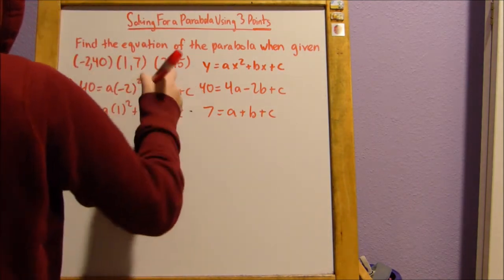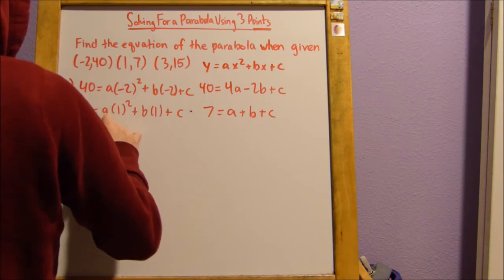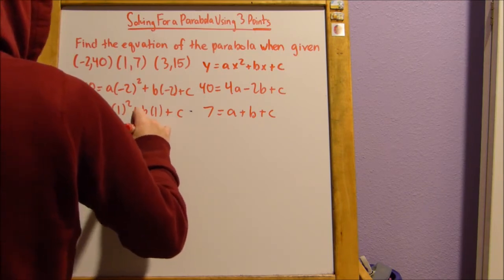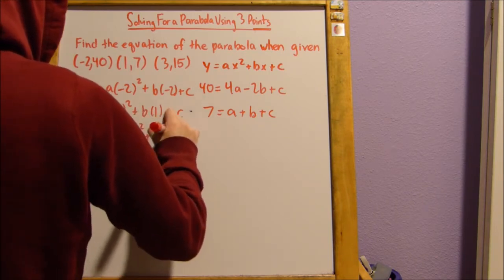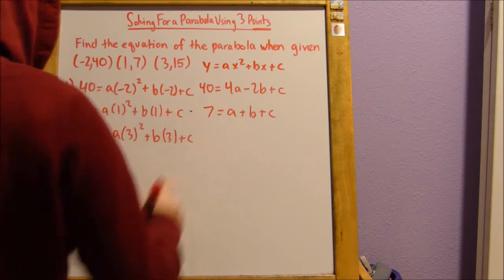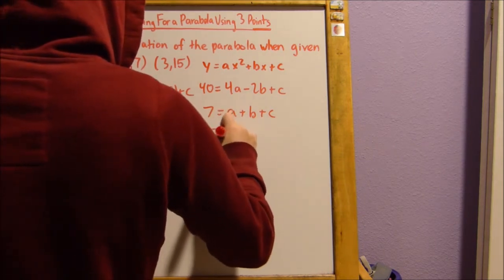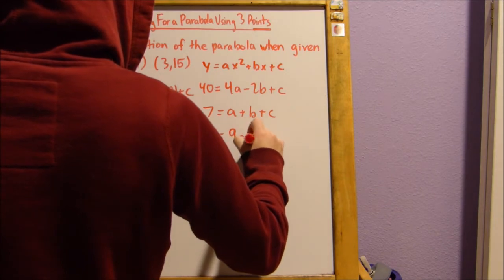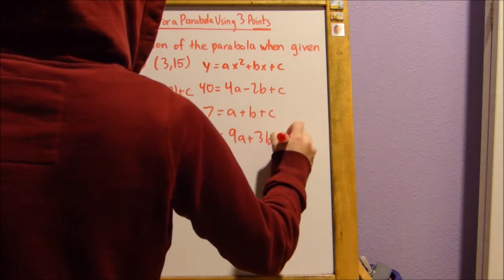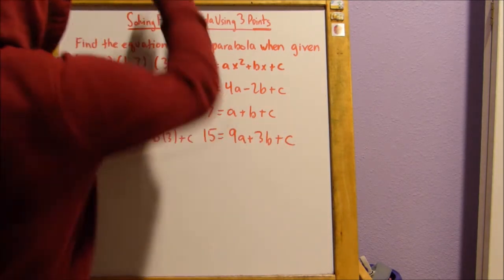And our third equation, using this coordinate pair, y is going to be 15 equals a times 3 squared plus b times 3 plus c. We're going to simplify that: 15 equals 9a plus 3b plus c. So here are our three equations.